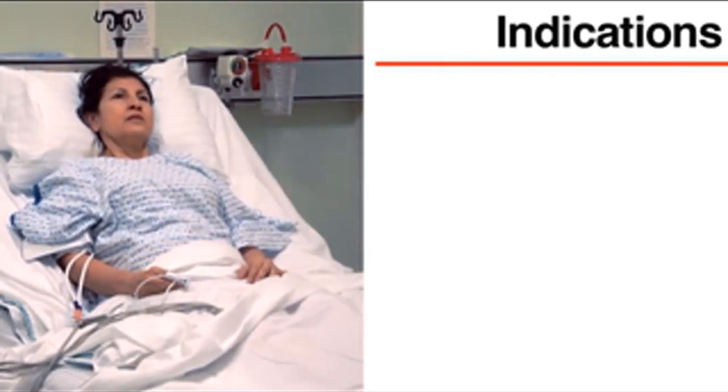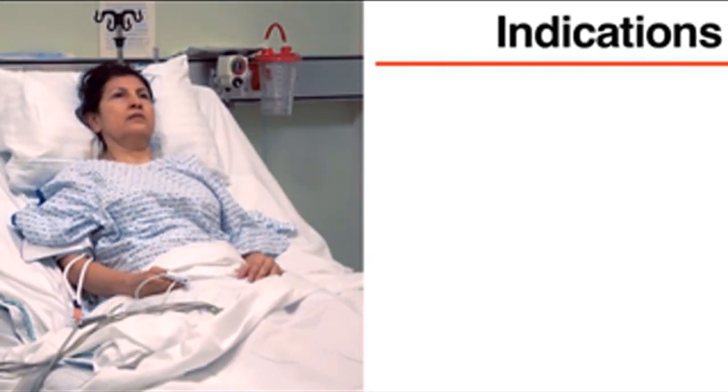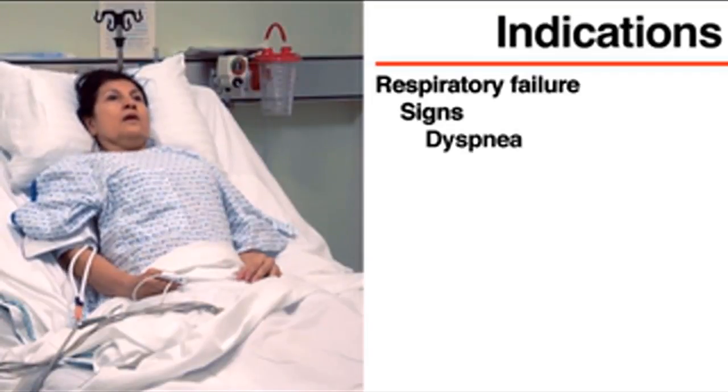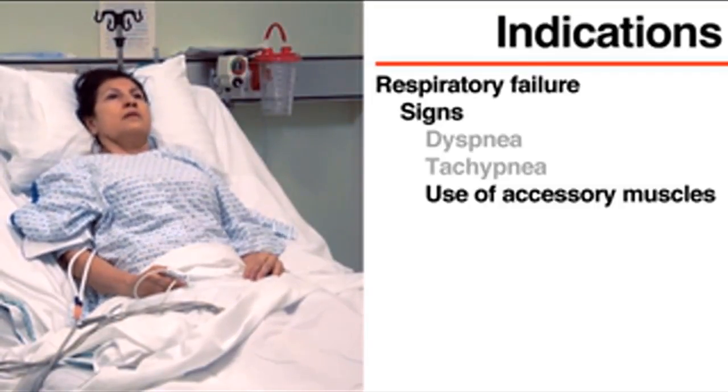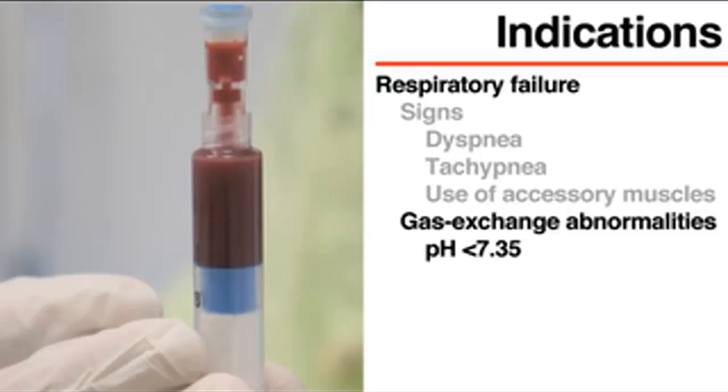Consider the use of BPAP when a patient has evidence of respiratory failure. Signs include dyspnea, tachypnea, or use of the accessory muscles of respiration. Gas exchange abnormalities include an arterial pH of less than 7.35, a partial pressure of arterial carbon dioxide, or PaCO2, of more than 45 mmHg, and a ratio of the partial pressure of arterial oxygen, or PaO2, to the fraction of inspired oxygen, or FiO2, of less than 200.